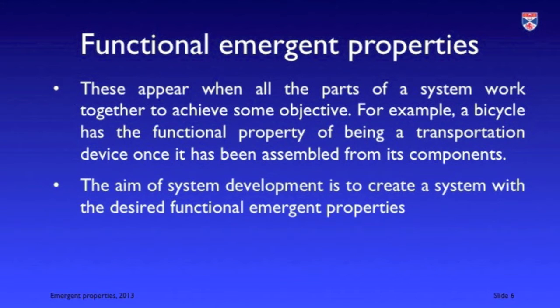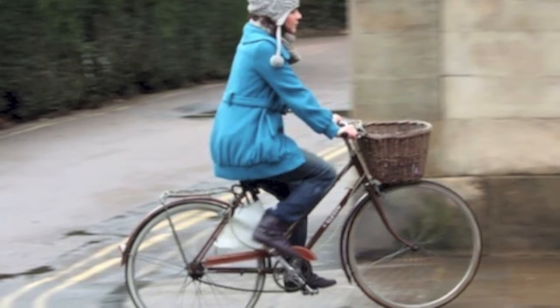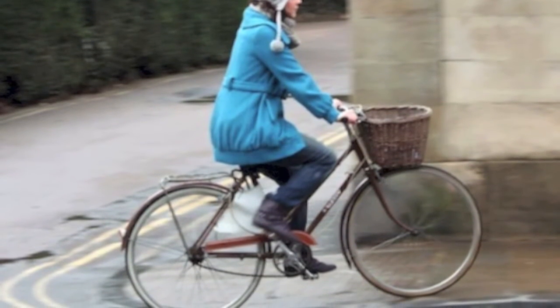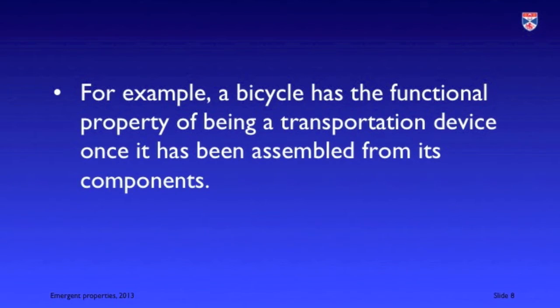There are two types of emergent property. There's the notion of functional properties, which are largely what we're trying to achieve when creating a system. For example, if we have a box of bicycle parts, they don't do anything. But when we assemble them in the right relationships, we create a transportation device. So a functional emergent property is something the system does — usually what we're trying to achieve as part of the design process.